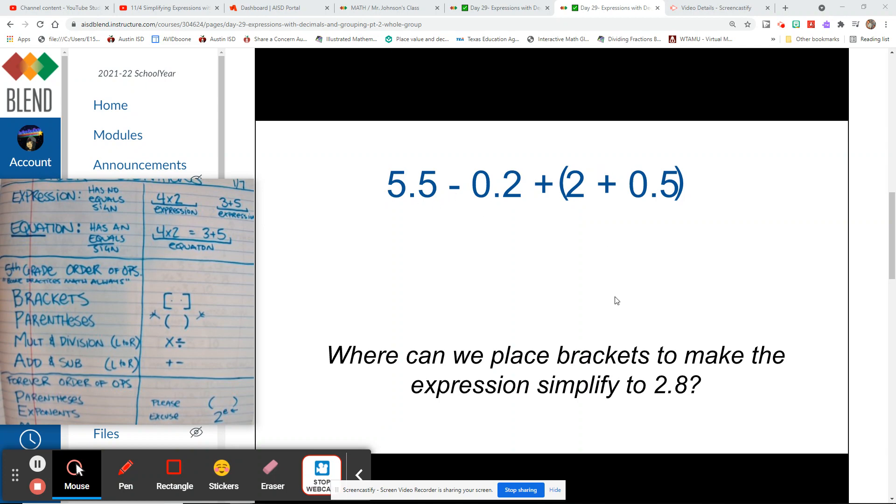In this situation, I'm trying to get an answer that equals 2.8. Currently, I would have to add this first, which would make 2.5. So if I have 2.5 here, and then at the beginning after I got rid of those parentheses, I would have 5.5 minus 0.2, and then I would be adding 2.5, which would make my number way too large.